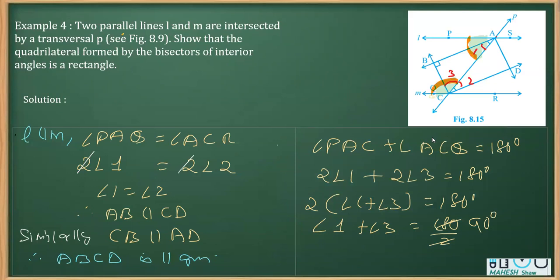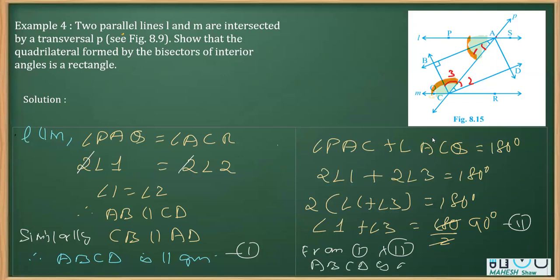We can mark this as equation 1 and the parallelogram result as equation 2. From equations 1 and 2, ABCD is a rectangle, because a parallelogram whose one angle is 90 degrees is a rectangle. This is how this question can be solved. Thank you.